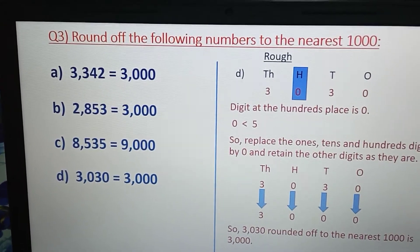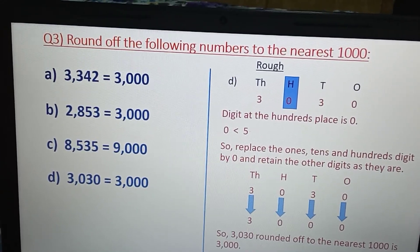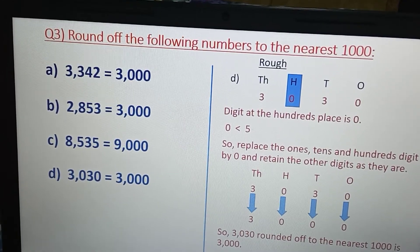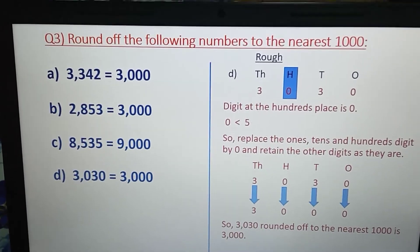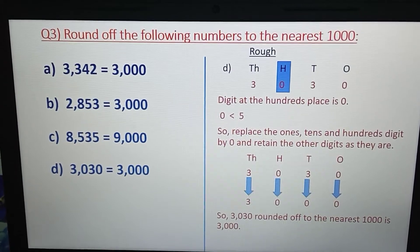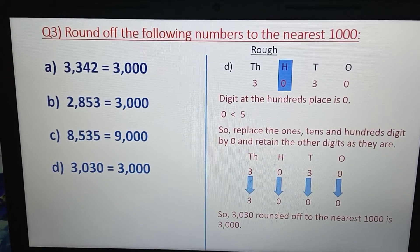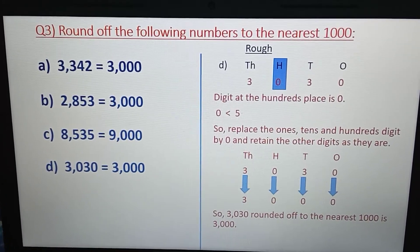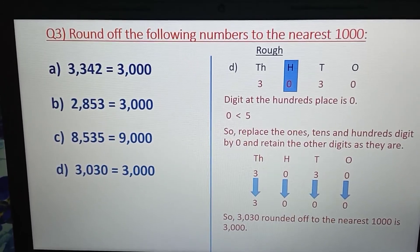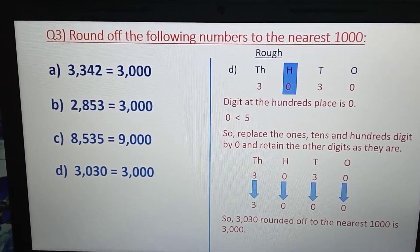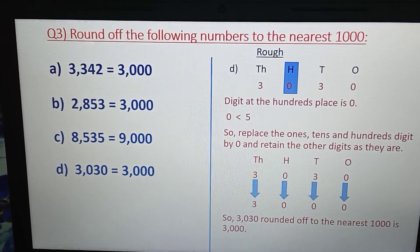Children, you just have to take care whether the digit at the hundreds place is less than 5 or more than 5. If the digit is less than 5, follow rule number 1. If the digit is more than 5 or equal to 5, follow rule number 2. Now write the rules for rounding off numbers to the nearest thousand in your notebook, along with the previous rules for rounding off to the nearest 10 and 100. Solve all the questions.